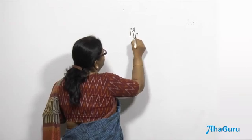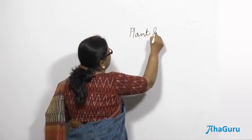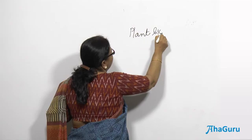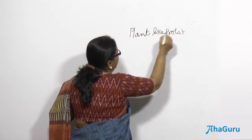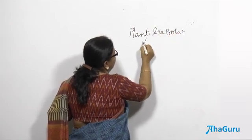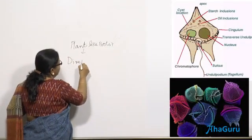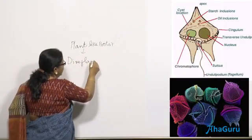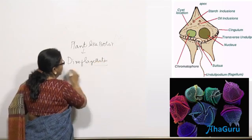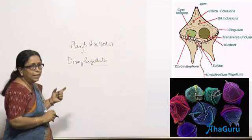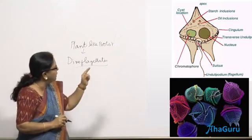These plant-like protists include something called dinoflagellates. Dinoflagellates, as the name indicates, they have two flagella, but the way the flagella are arranged is very different.